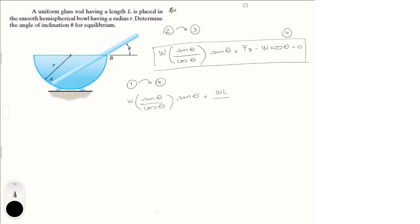the weight times the length over 4R minus W cosine of theta is equal to 0.